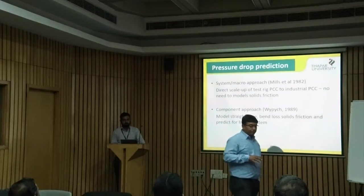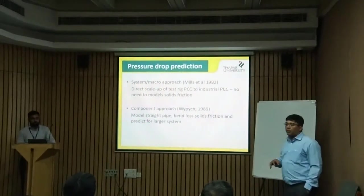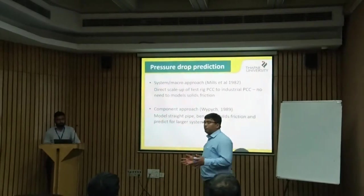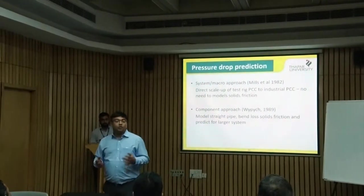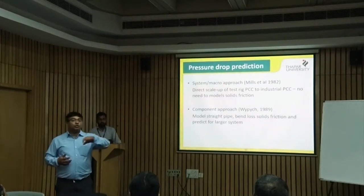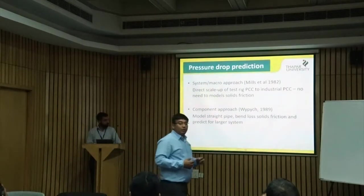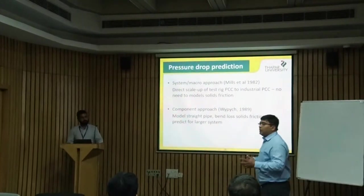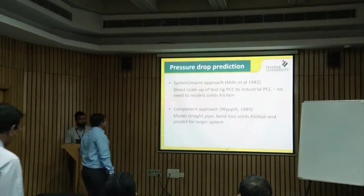Let's say you want to design an industrial system. You have a laboratory or pilot plant, and you take the same material — say, for example, you want to convey cement in the industry, so you take cement and convey it through your pipeline in the laboratory. The laboratory pipeline will have a smaller diameter and it will operate at a smaller rate, whereas in the industry you will have larger systems.